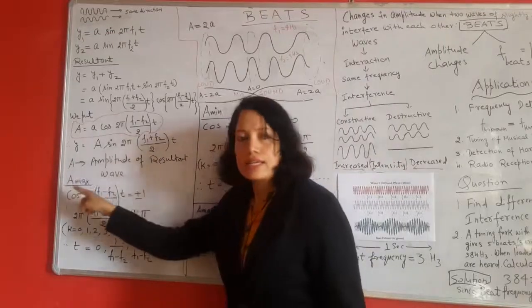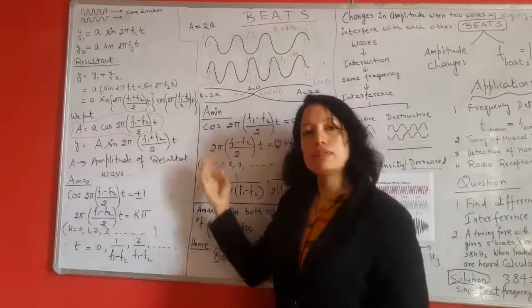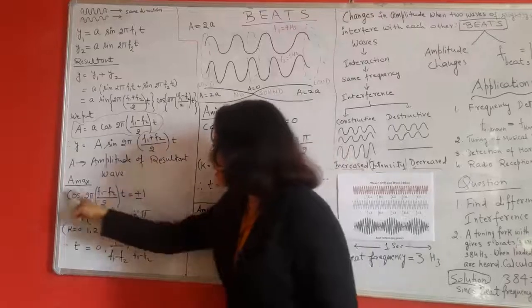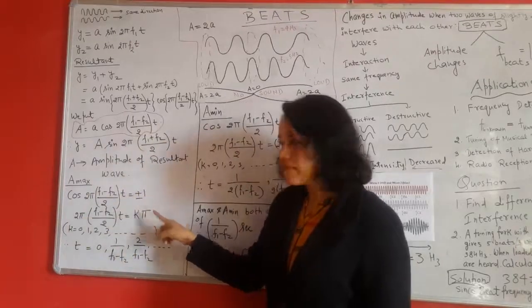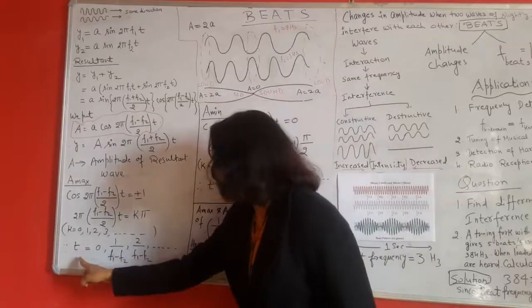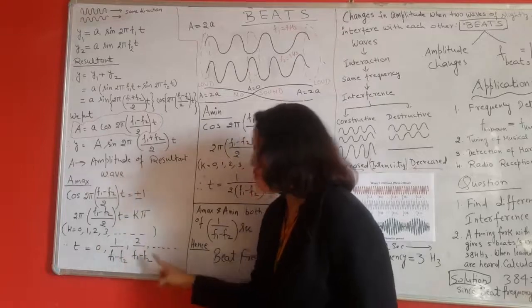This A can take two different values, one maximum, another minimum. The maximum value of A will be given by putting this cos term equal to plus or minus 1. On solving this we will get the values of t as 0, 1/(f1 - f2), 2/(f1 - f2) and so on.